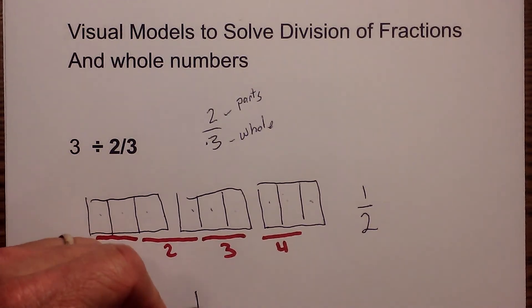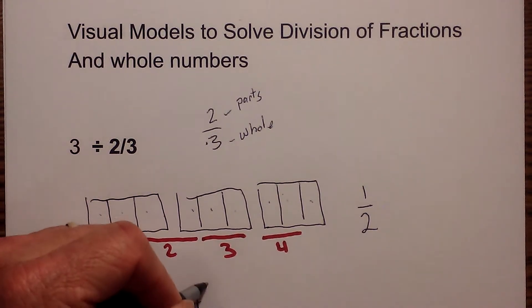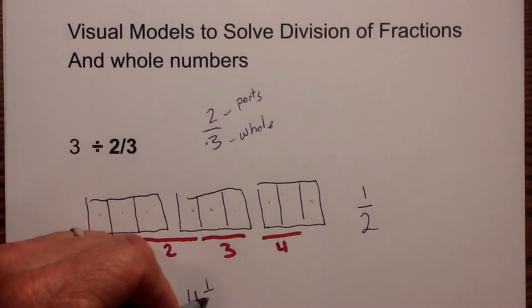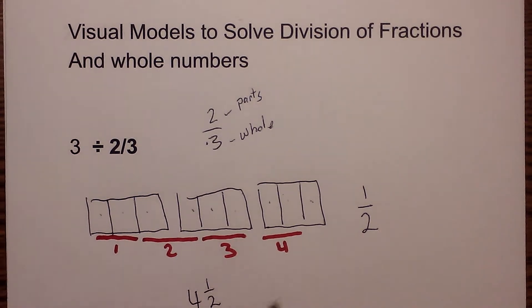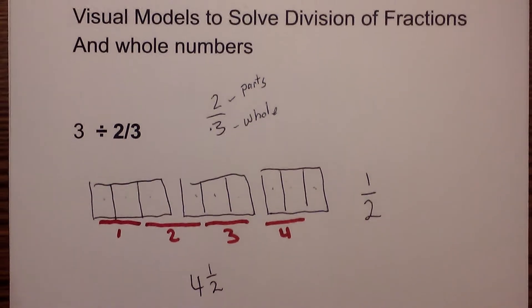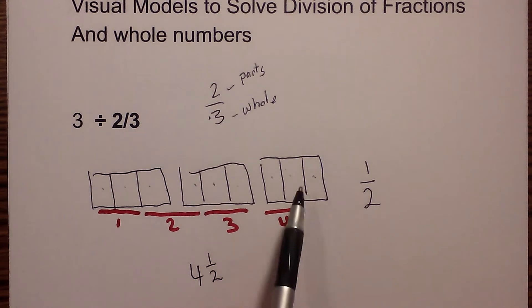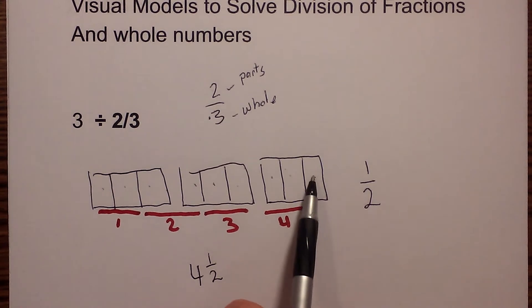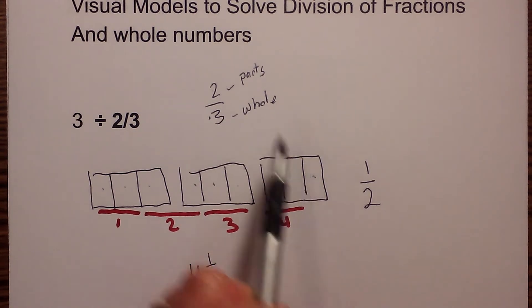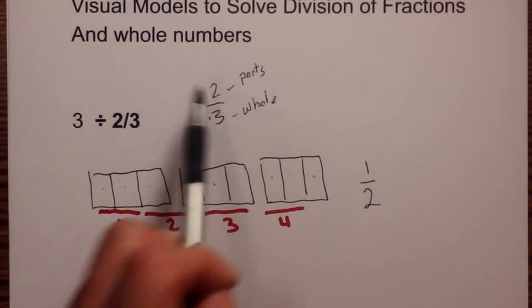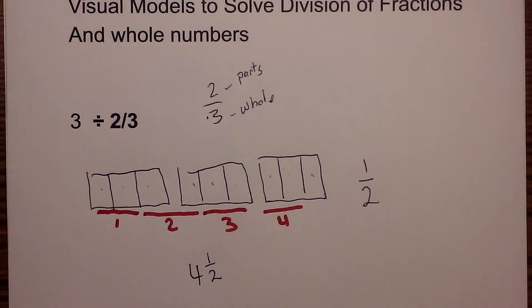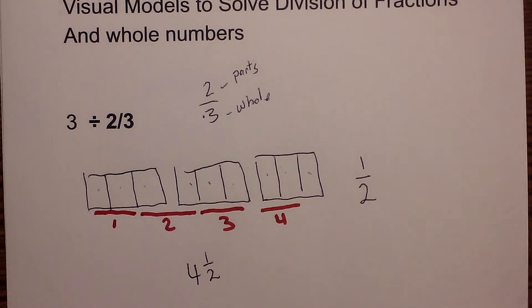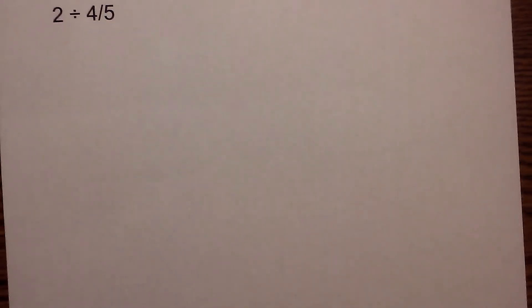So it will become 4 and 1 half, again because I only have 1 of the 2 parts that I need. Let's work another example and see if it may start to make some sense.